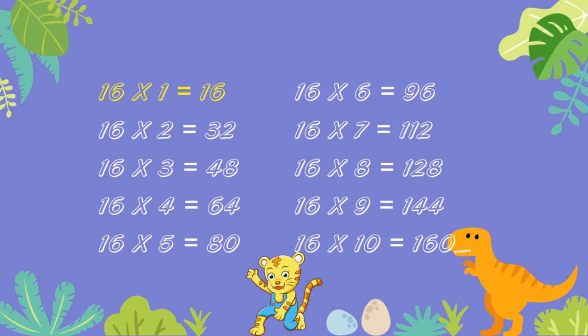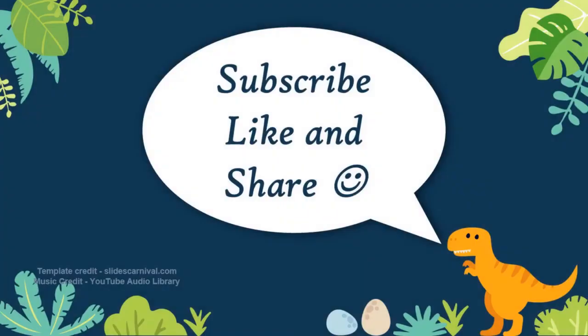16 ones are 16. 16 twos are 32. 16 threes are 48. 16 fours are 64. 16 fives are 80. 16 sixes are 96. 16 sevens are 112. 16 eights are 128. 16 nines are 144. 16 tens are 160.